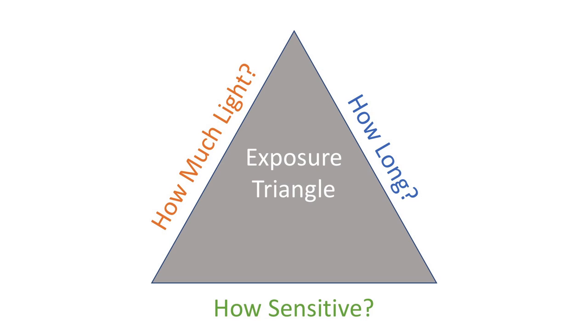In the first chapter we covered the three variables of photography: how much light comes into the camera, how long the camera is exposed for as far as film or the sensor, and how sensitive the sensor and film is.